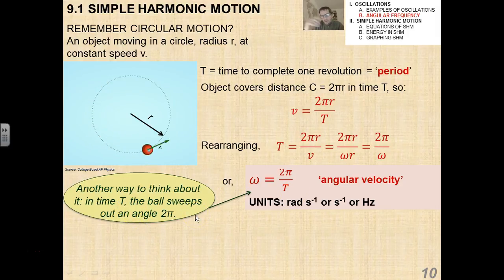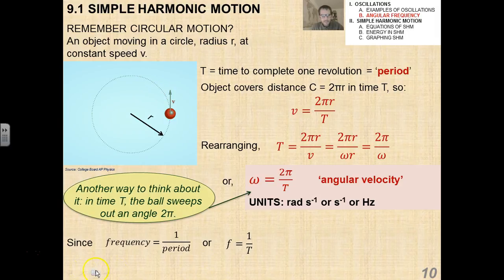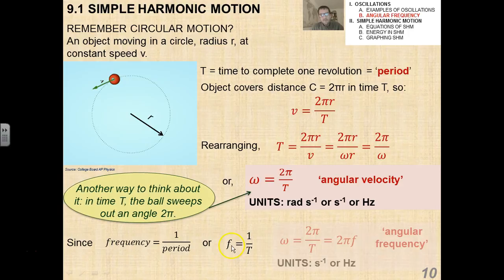Now, since the frequency is 1 over the period, or f equals 1 over T, we can also say that ω equals 2πf, and if you think about it in this term, we would actually refer to it as the angular frequency instead of the angular velocity. Really, the two of them are the same. They both have the same units, 1 over seconds or hertz, but just be aware of that term, angular frequency referring to 2πf, and angular velocity referring to 2π over capital T.